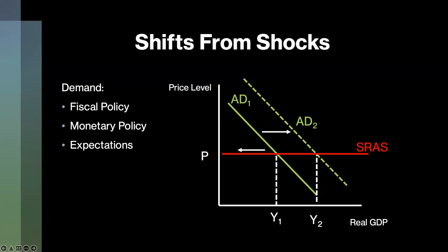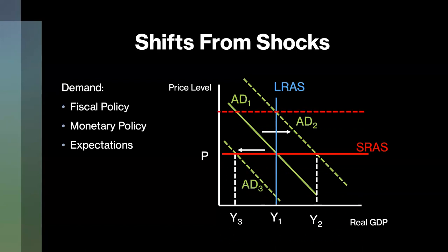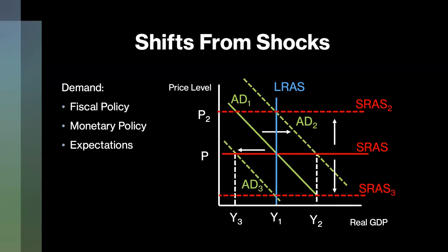Whereas a negative shock, because investors are instead afraid, causes the curve to shift left, resulting in a lower GDP at the same price. In the long run, however, a positive shock causes the short-run aggregate supply curve to adjust upward toward equilibrium, and a negative shock will cause the short-run aggregate supply curve to shift downward toward equilibrium. It should also be noted that any change in inflation does not result in a shift, but instead a movement along the aggregate demand curve.